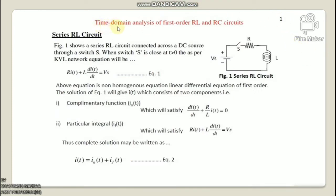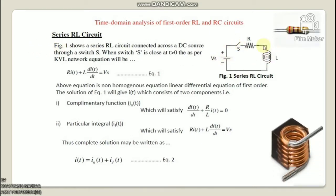Now I will discuss time domain analysis of the first order series RL circuit. Figure one shows a series RL circuit connected to a DC source through a switch. When switch S is closed at T greater than zero, as per KVL, the network equation will be: R·I(t) + L·dI/dt = Vs, which is equation 1. Remember this equation — at the end of this topic I will conclude the equation.